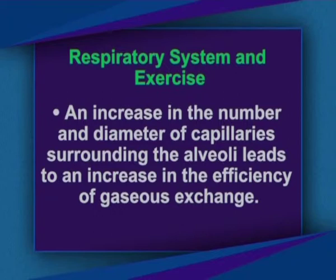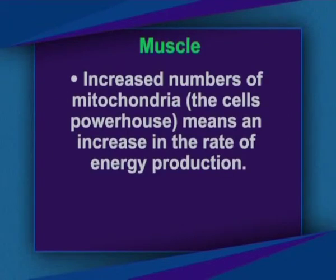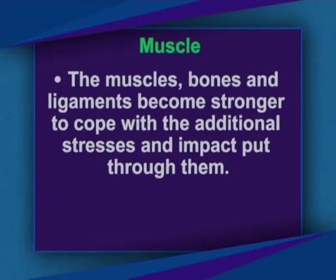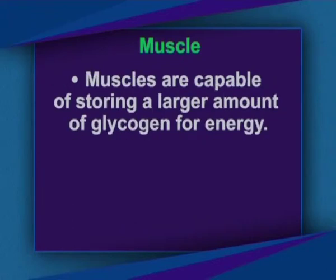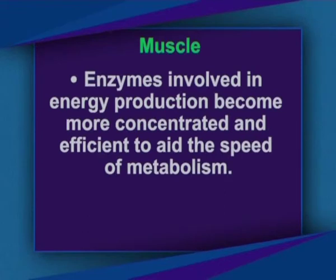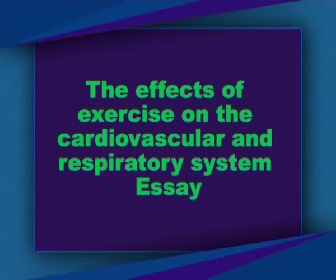An increase in the number and diameter of capillaries surrounding the alveoli leads to increased efficiency of gaseous exchange. In the muscles, an increased number of mitochondria means an increase in the rate of energy production. Bones and ligaments become stronger to cope with additional stress. The amount of myoglobin within skeletal muscle increases, allowing more oxygen to be stored and transported to the mitochondria. Muscles store larger amounts of glycogen, and enzymes involved in energy production become more concentrated and efficient.